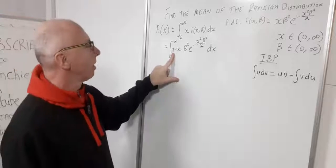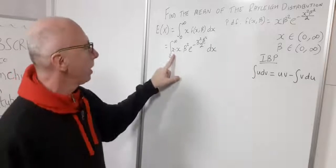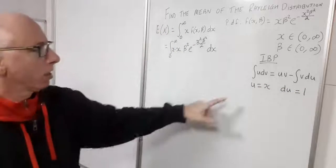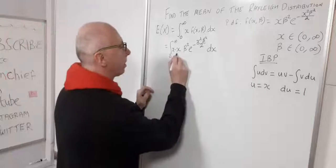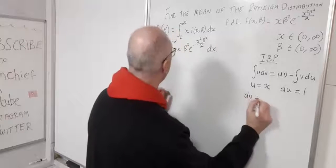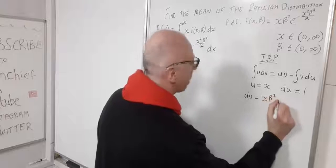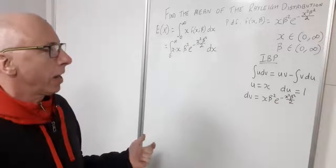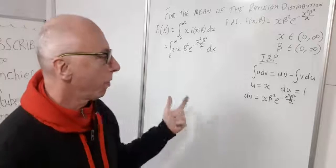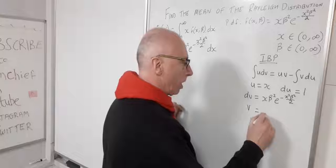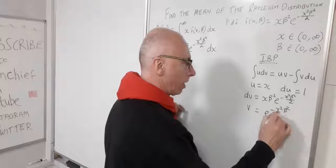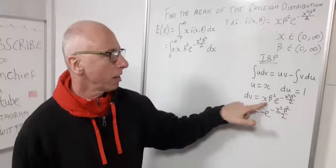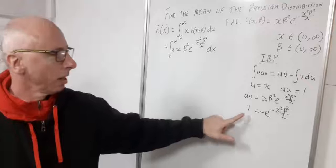We differentiate x, so let u equal x, giving du equal to 1. Then dv equals x·beta squared·e to the minus x squared beta squared over 2. Integrating dv using a u substitution — as shown in a previous video — the x terms cancel and we get v equals negative e to the minus x squared beta squared over 2.